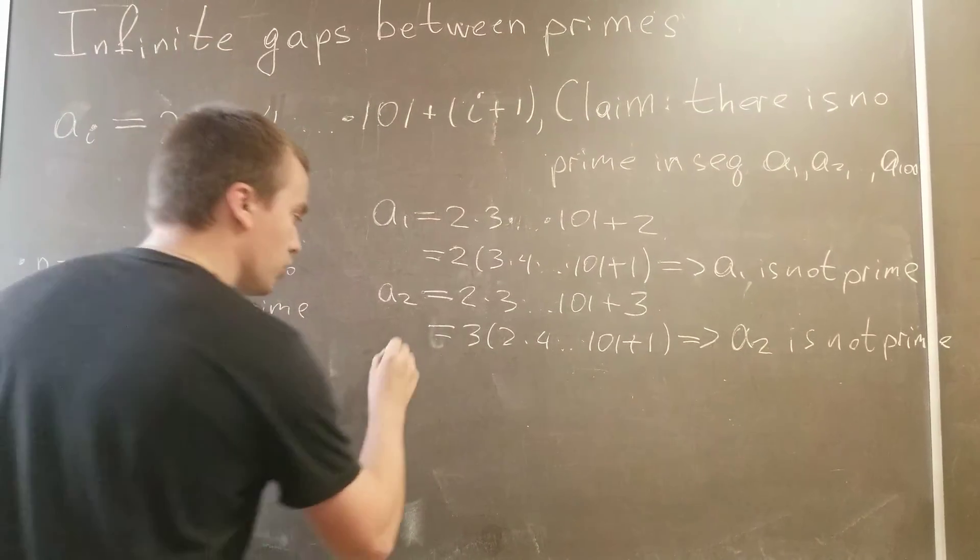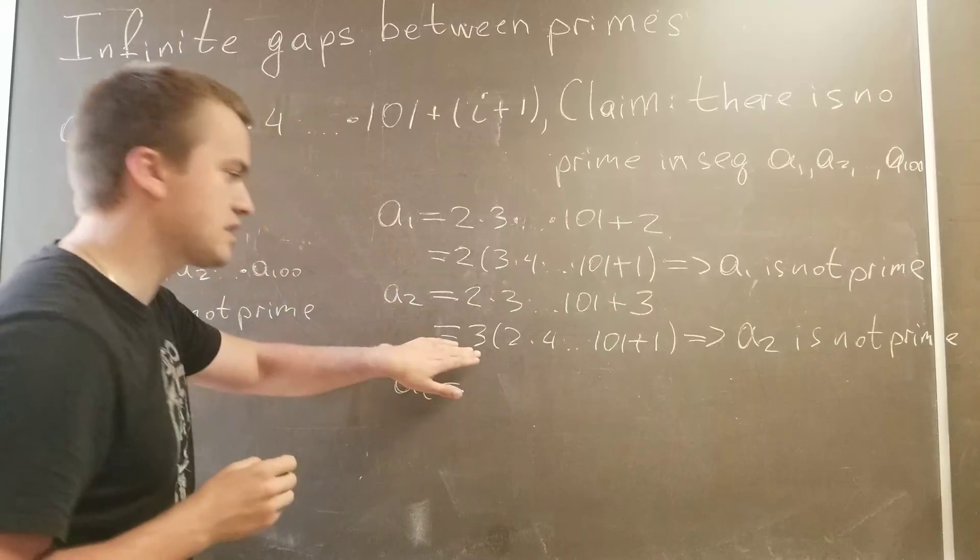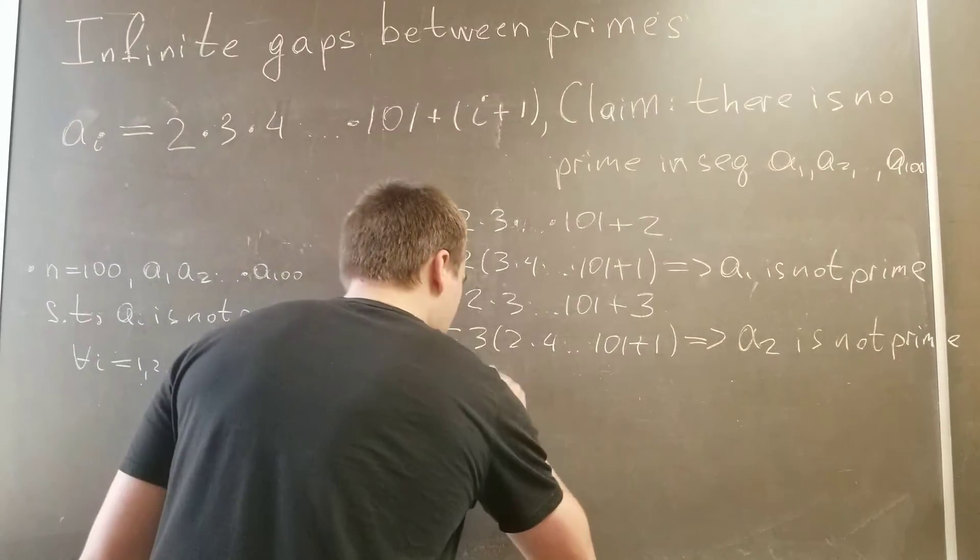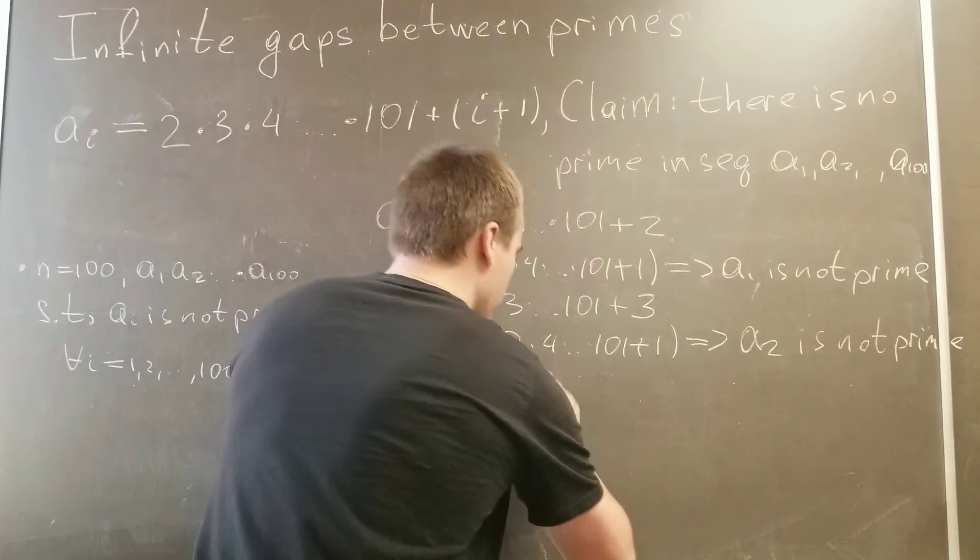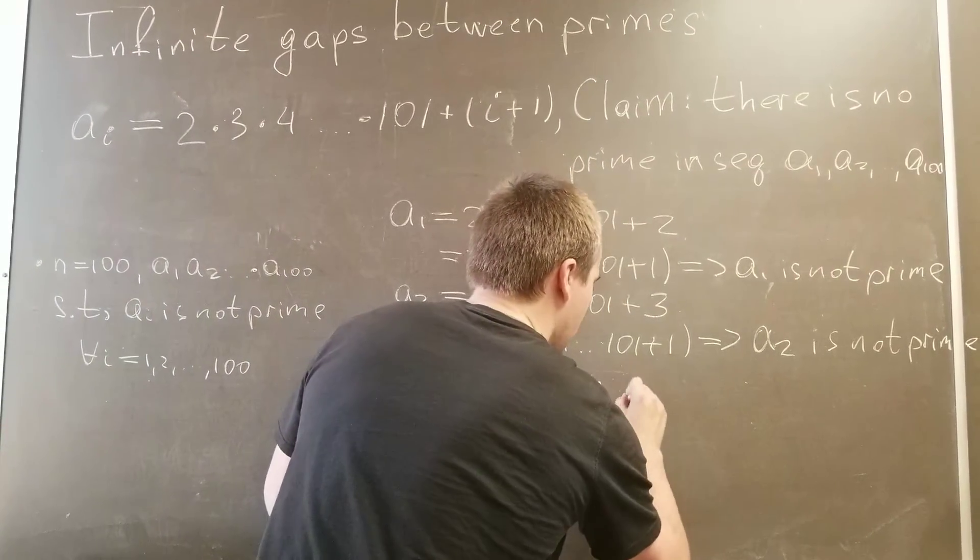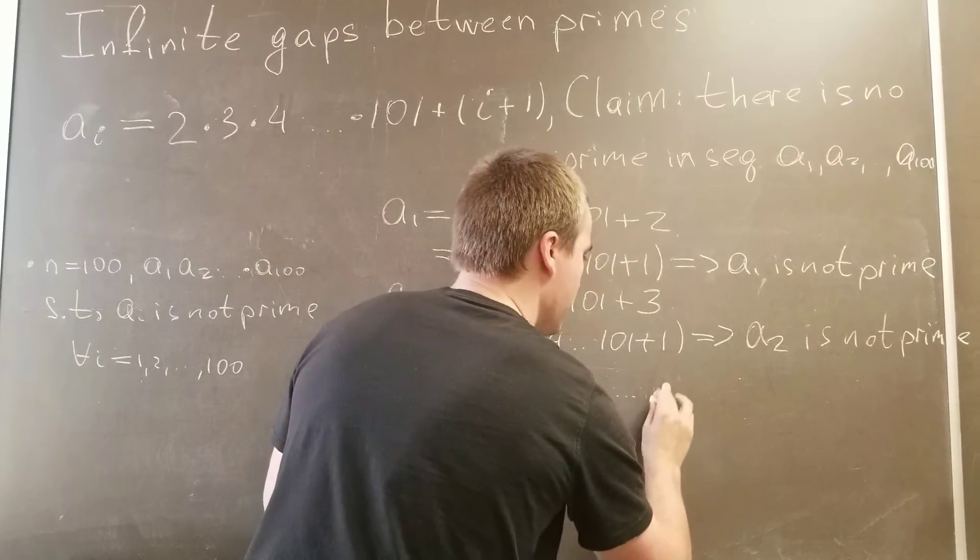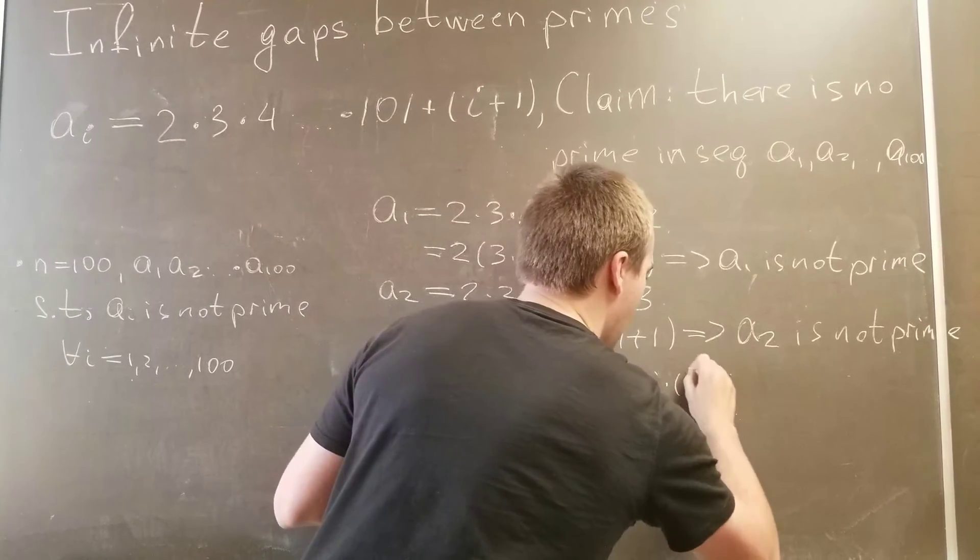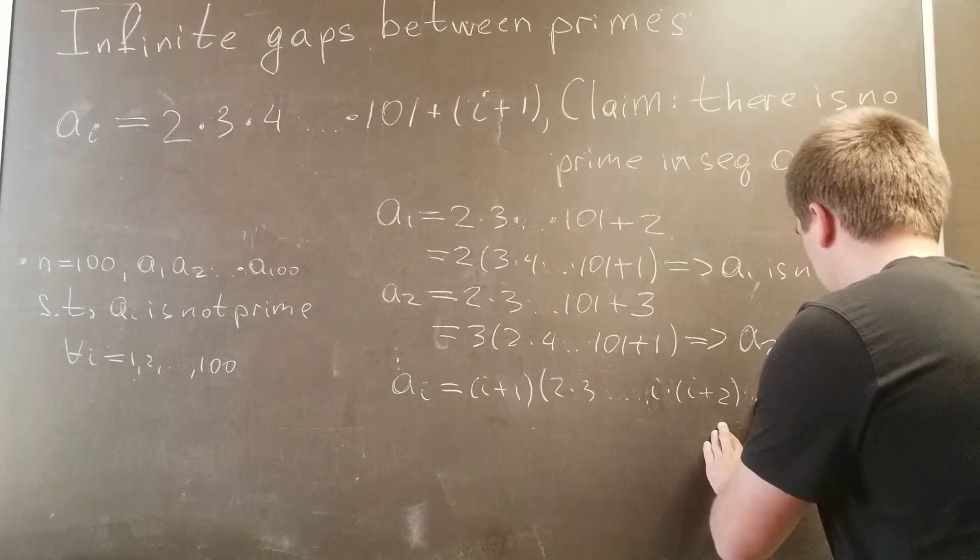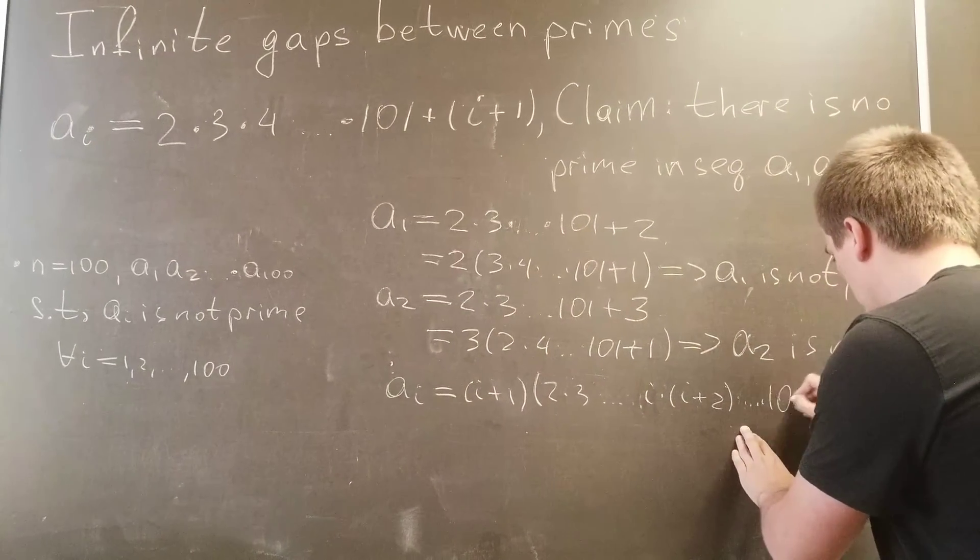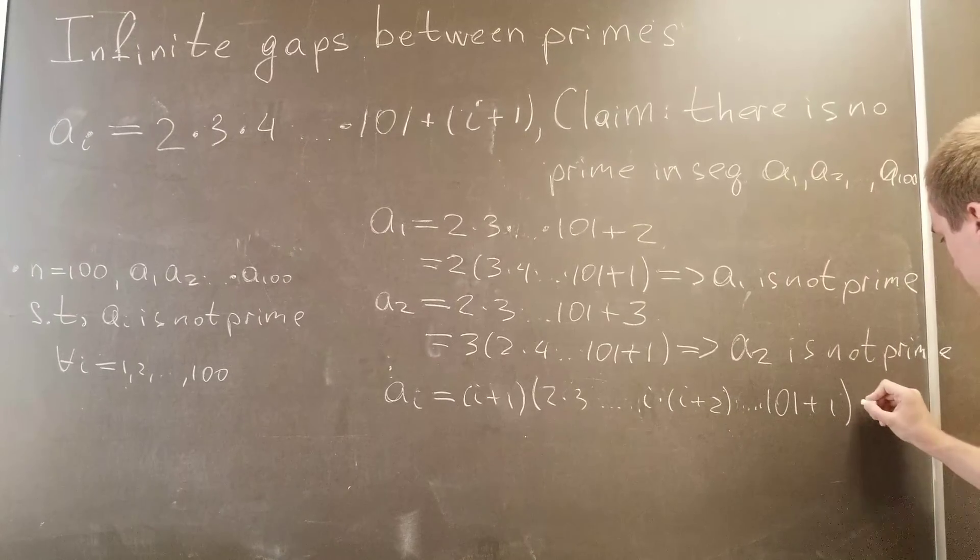In the same way you can show that if you have a_i, using the same procedure you're going to factor out the i plus 1 number. And you're going to have 2 times 3 times i times (i+2) times... times 101 plus 1. And this also is not prime.